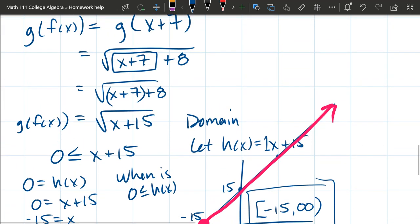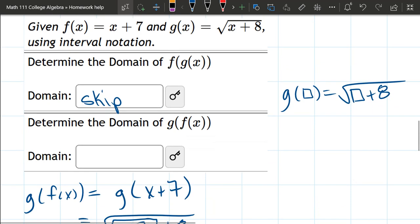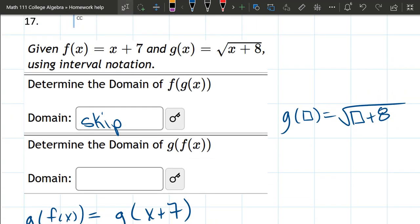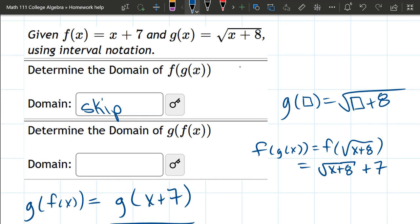The other part, they want us to compose them in the other order. I had written skip up here. I will briefly just compose these functions in the other order. It's f of g of x. So we're going to go g first. So that's square root x plus 8. And what does the f function do? If we look up here, f of a box takes the box and adds 7. So it takes x plus 8 square root and adds 7. It adds outside the square root. And that's basically it. You need to do the domain. So you need to see when is 0 less than or equal to x plus 8. Really similar question to the one we just did. So I'm not going to work the rest of this out.